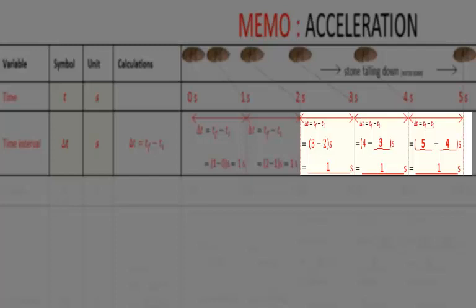So for the third interval, T final is 3 seconds. T initial, 2 seconds. 3 minus 2 equals 1. For the fourth interval, 4 minus 3 equals 1 second duration. The final interval, 5 minus 4 equals 1 second duration.